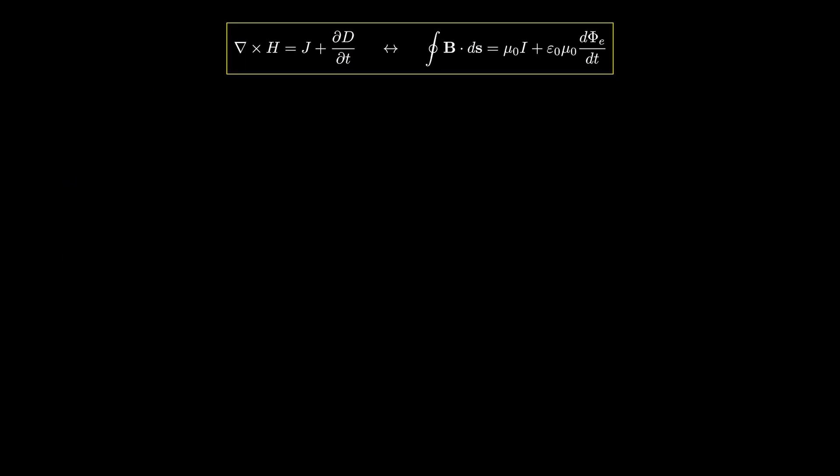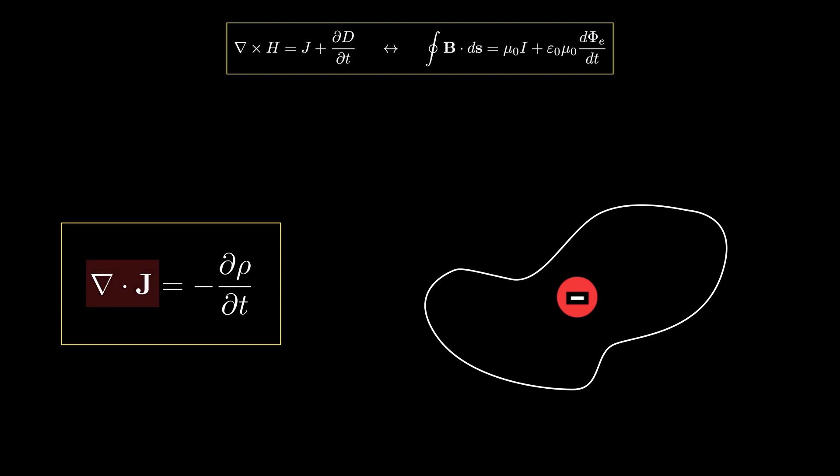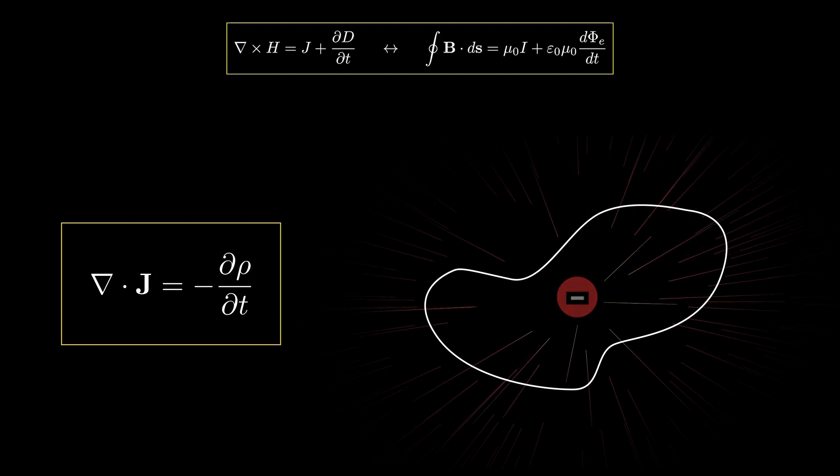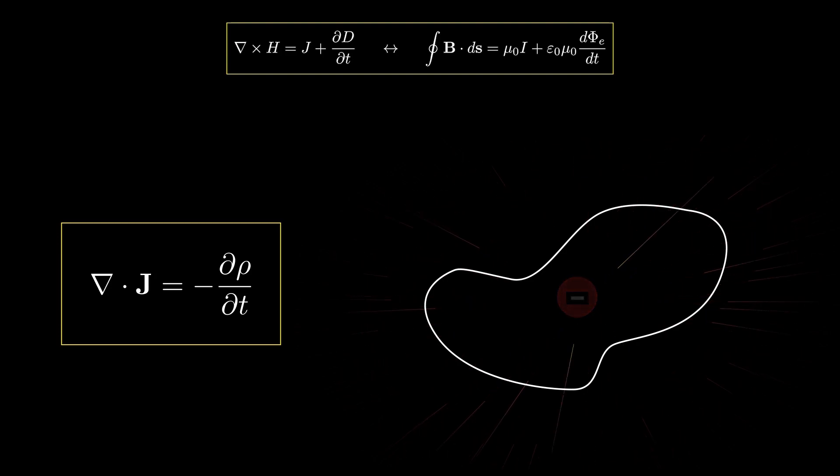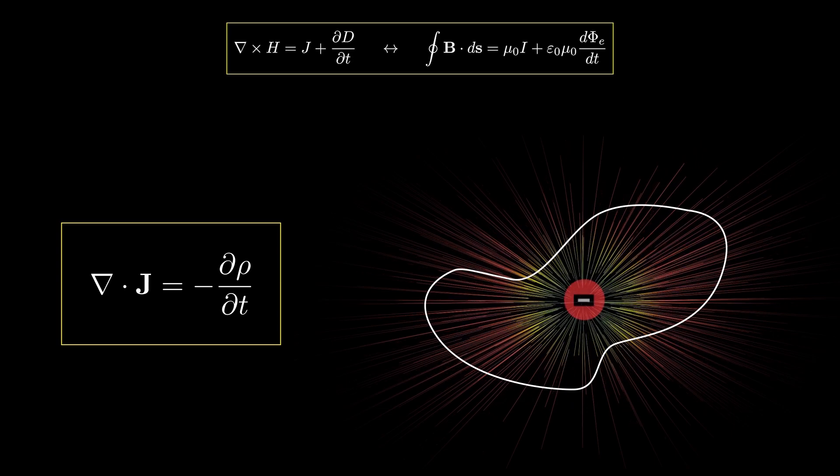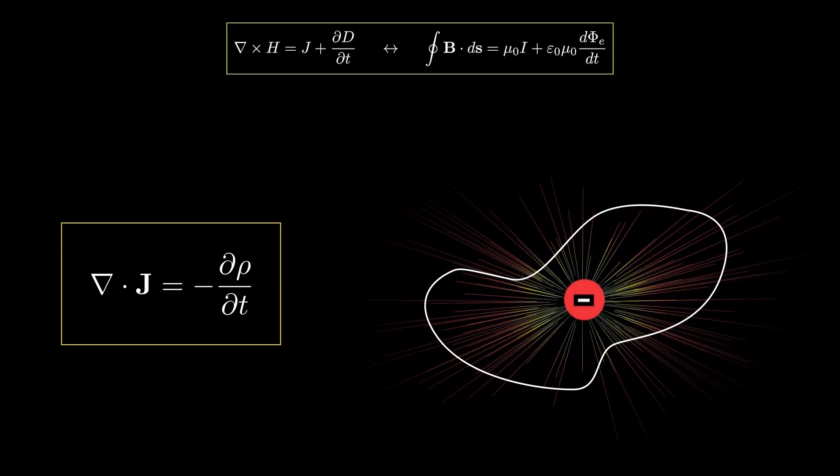Continuity equation: suppose we have a closed surface with some charge distributed within it. Continuity equation states that the divergence of current density, or the amount of electric current flowing out of the surface, is equal to the negative rate of change of the charge density. Recall that electric current is the flow of electric charge. So if the divergence of current density is positive, then more charge is exiting than entering the volume. Hence the amount of charge within the volume must be decreasing. That's why we have a negative sign here. And if the electric current is flowing into the surface with negative divergence, then the amount of electric charge must be increasing.